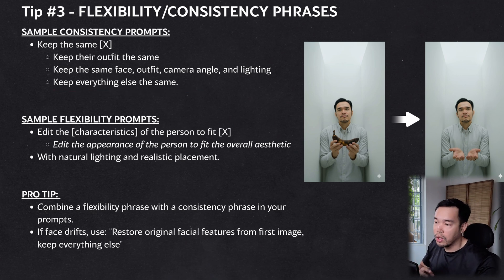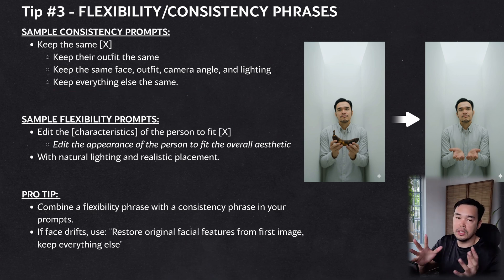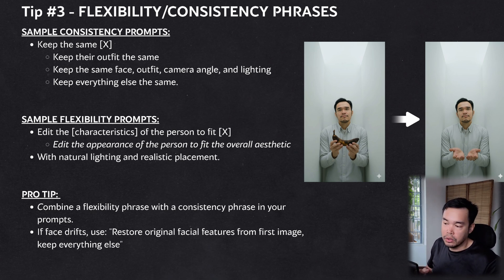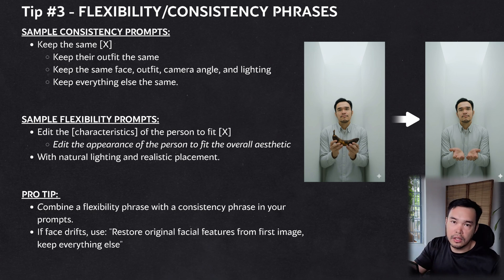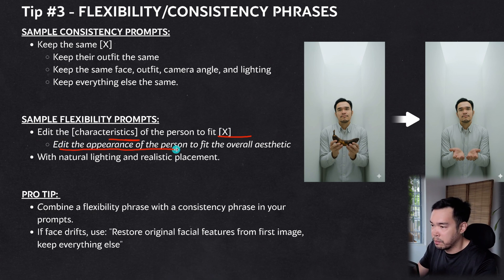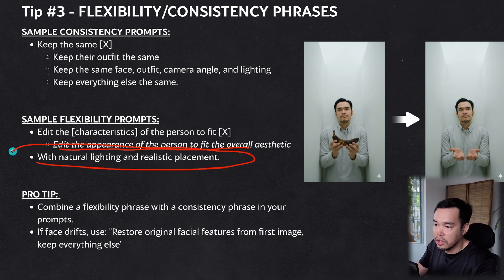Flexibility prompts are the other way around — you want Nano Banana to naturally adapt the image based on what you're editing. For example, if you're putting a man in a thunderstorm, you'd want the lighting to naturally adapt to the rainstorm setting. You can say 'edit the characteristics of the person to fit X' or 'edit the appearance to fit the overall aesthetic' — or my favorite: 'with natural lighting and realistic placements.'